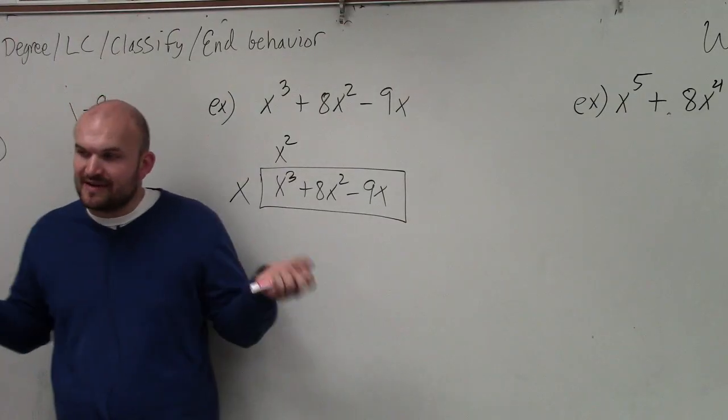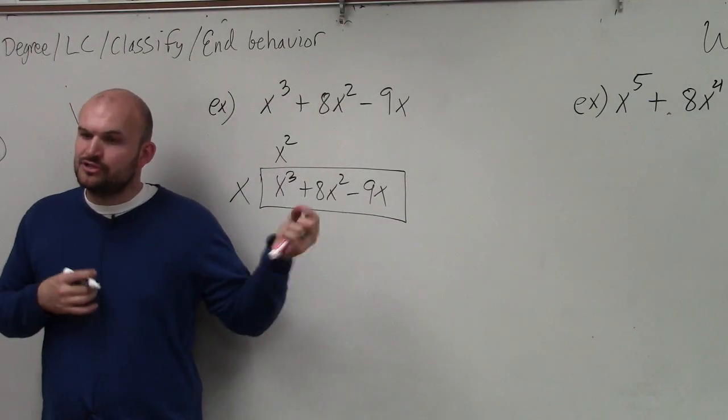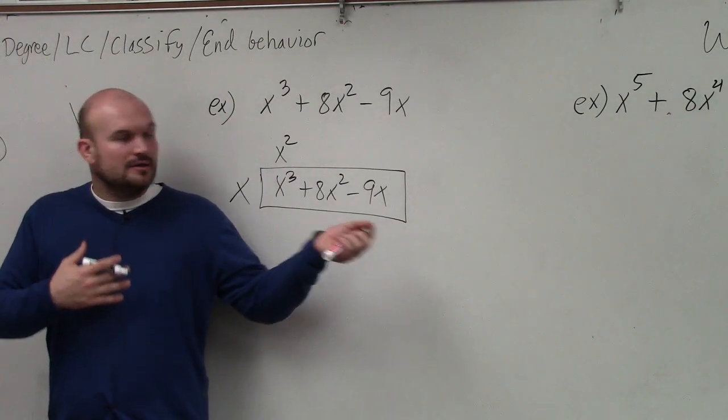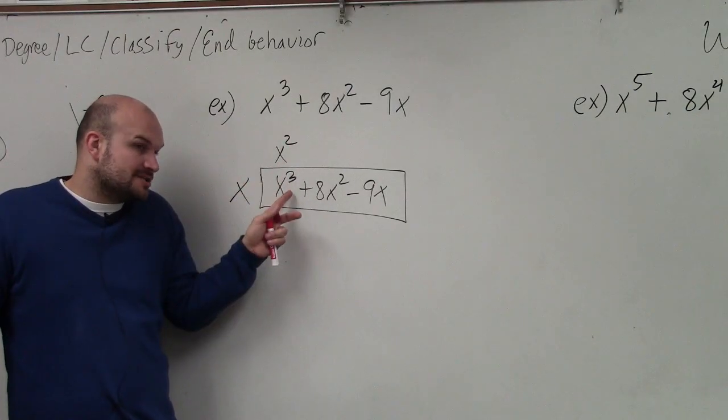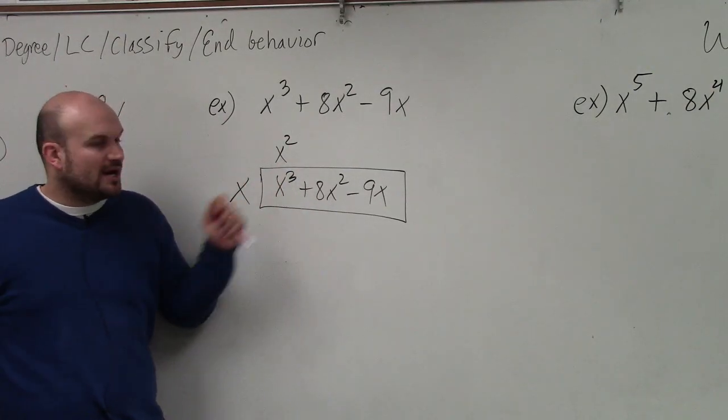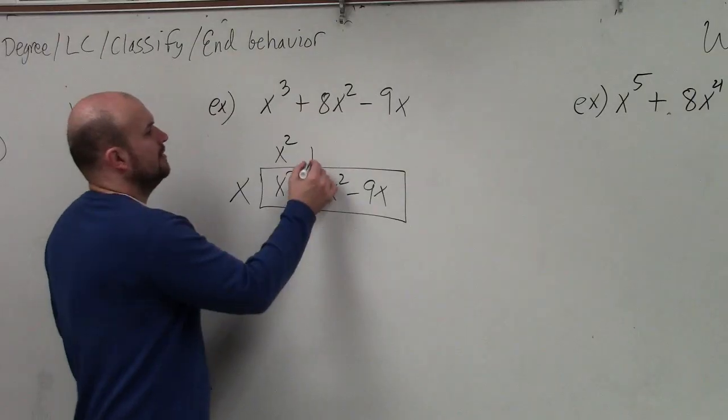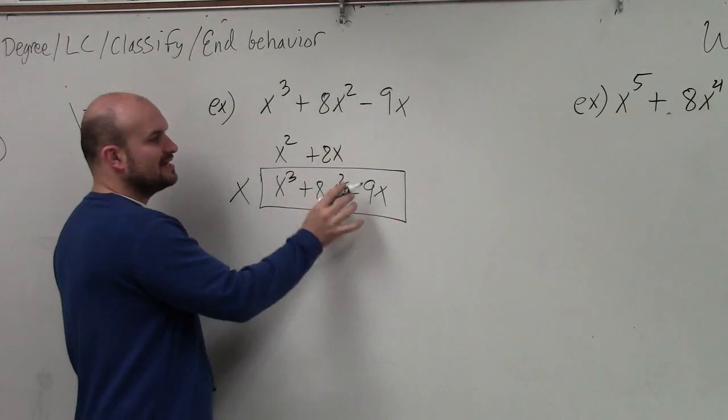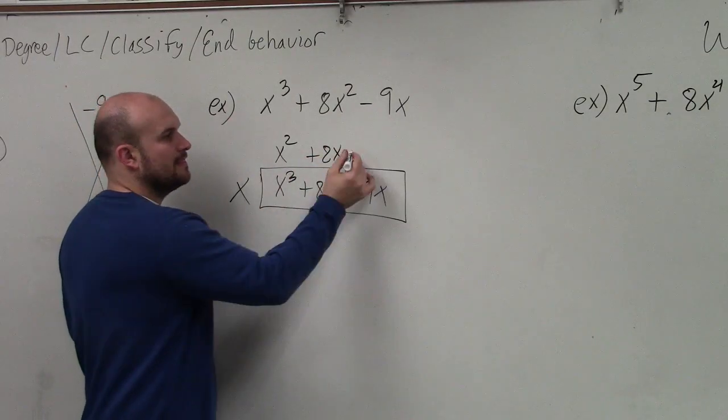Remember, ladies and gentlemen, remember the rules of exponents. When you're multiplying exponents, you add the powers, right? So x times x squared is x cubed. x times what gives me 8x squared? 8x. And x times what gives me negative 9x? Negative 9.